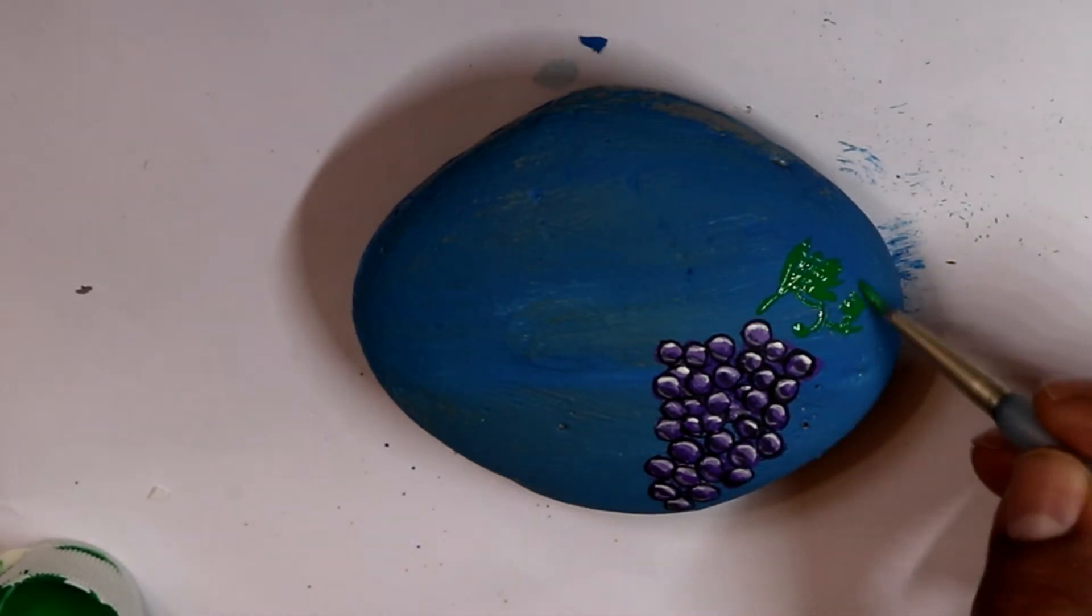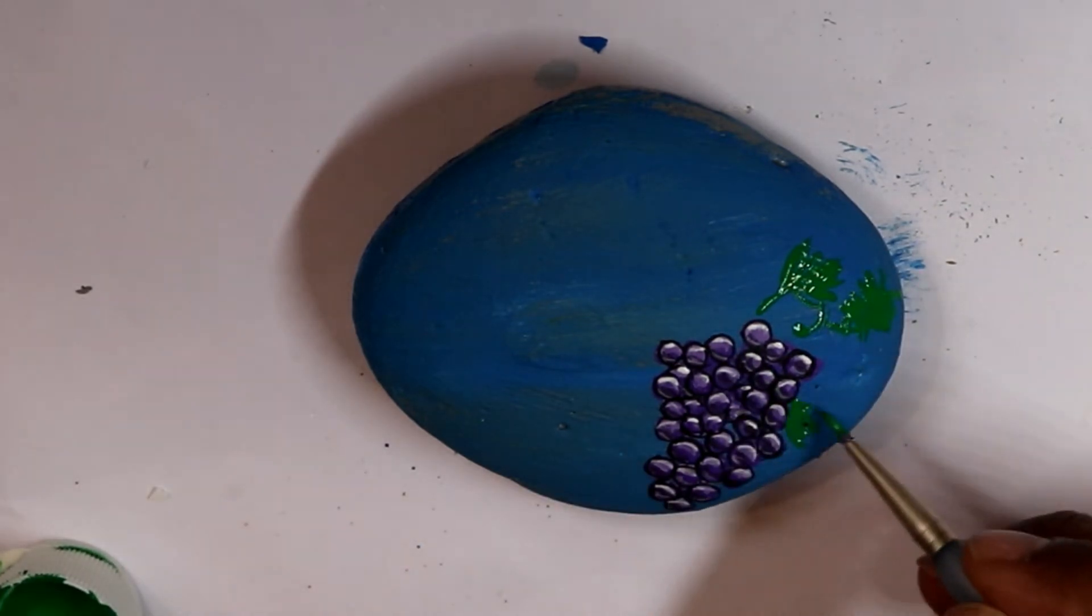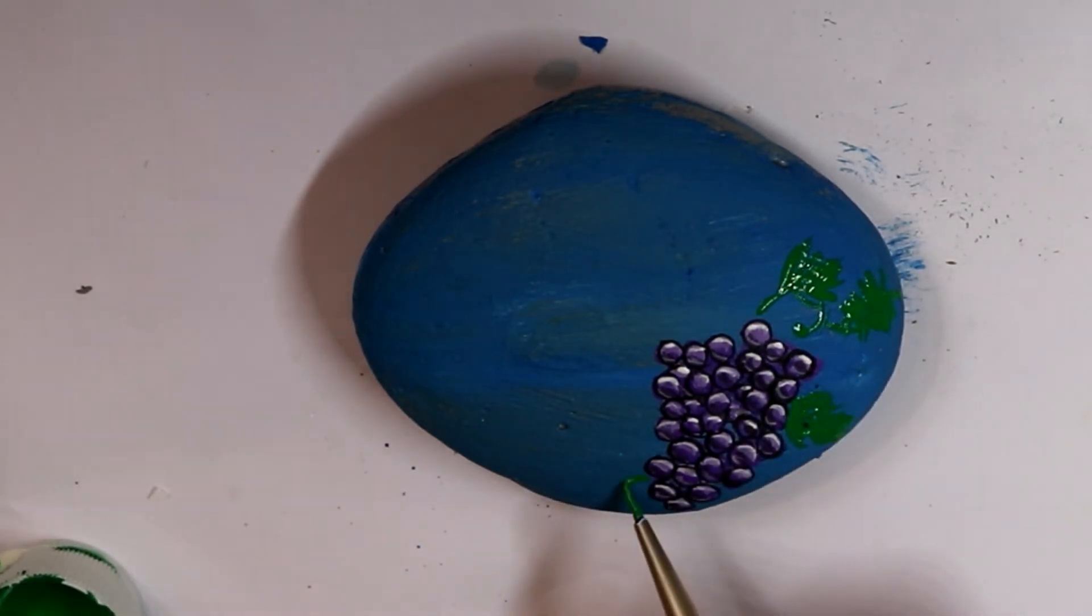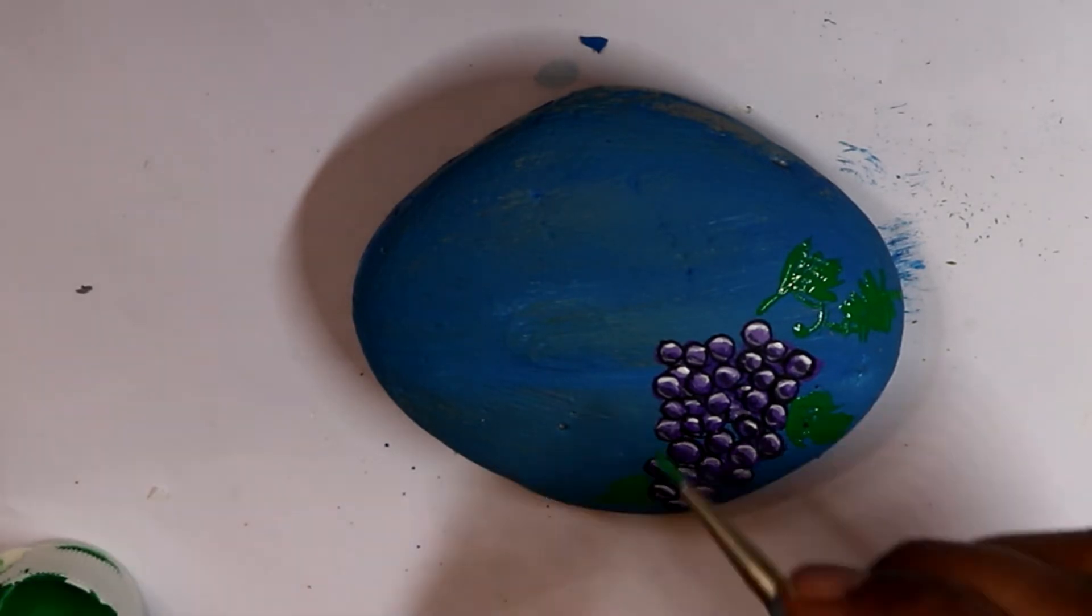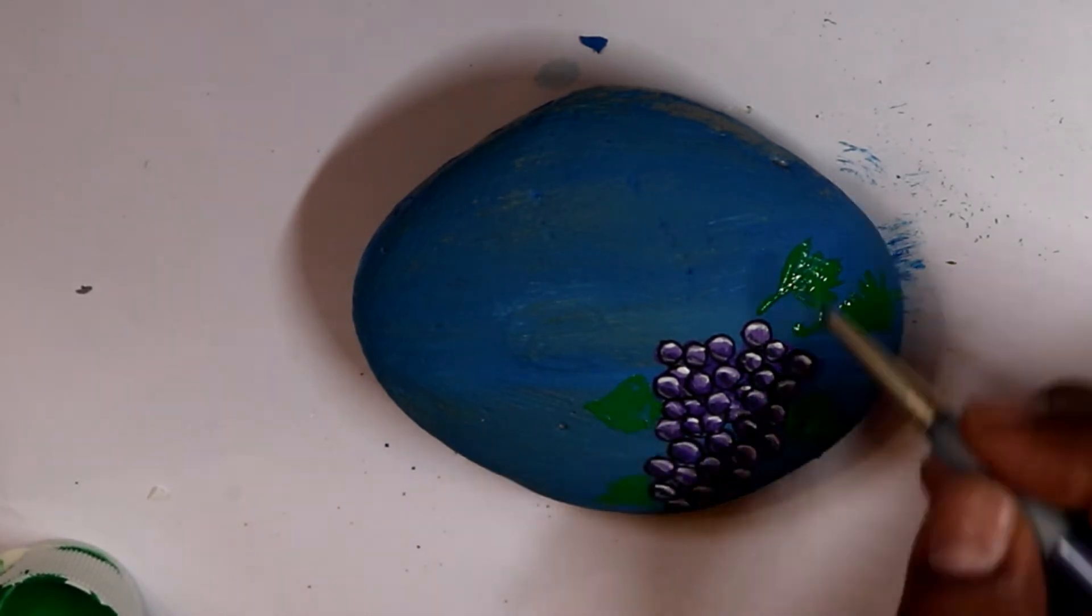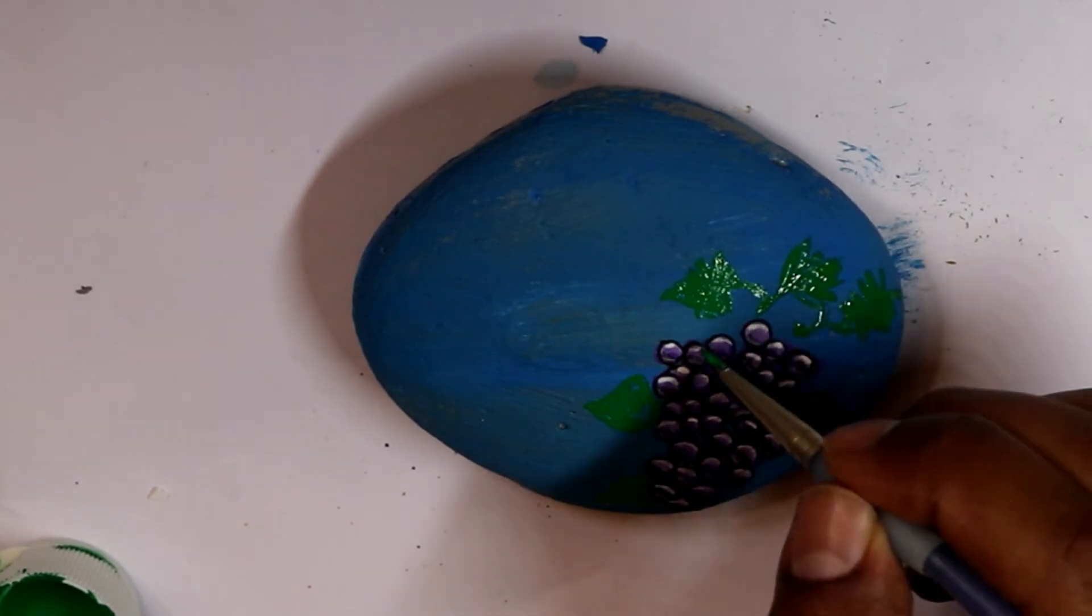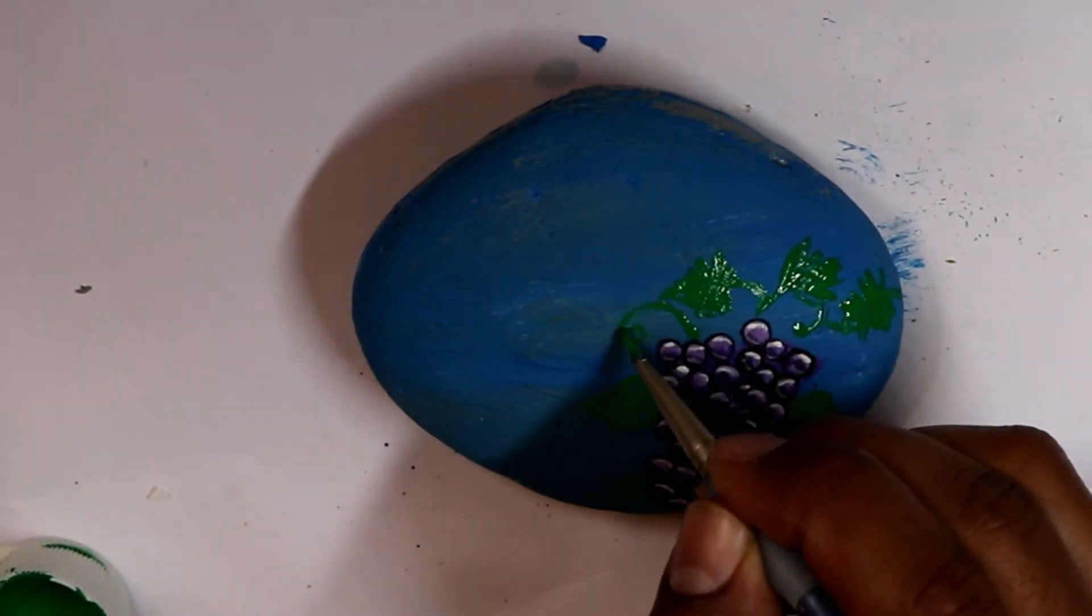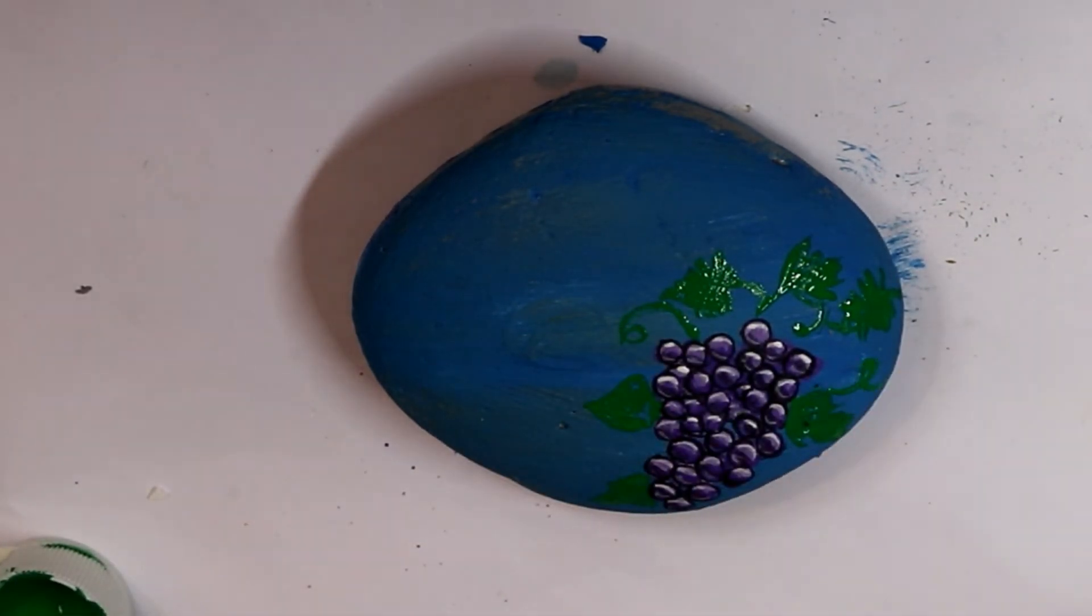Going back to the rock, I used green paint for the leaves. Once I finished with the leaves, while they were still wet, I applied some white paint to add a little bit of texture.